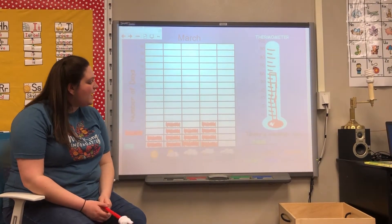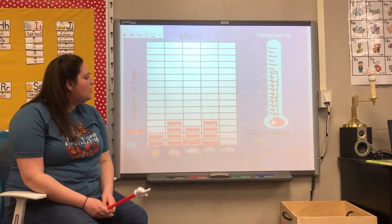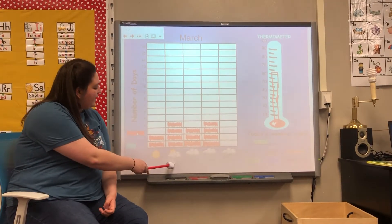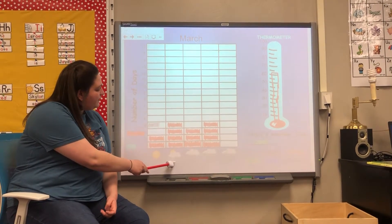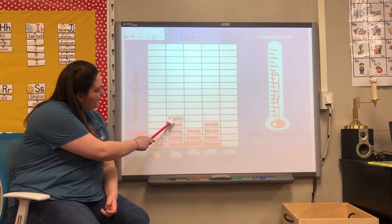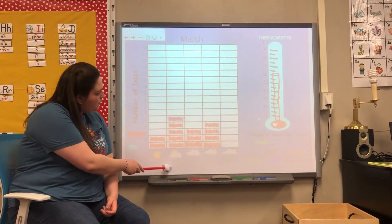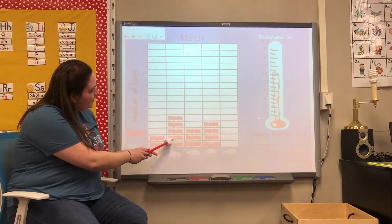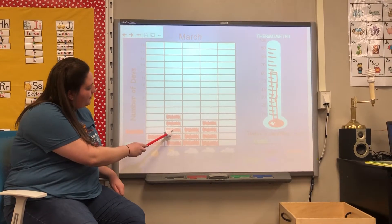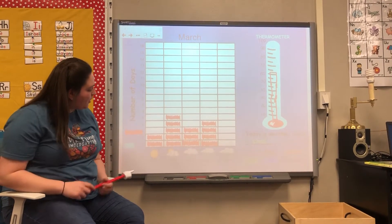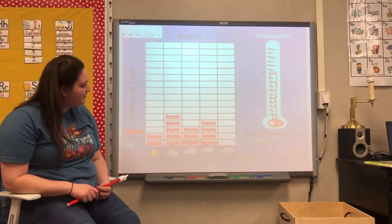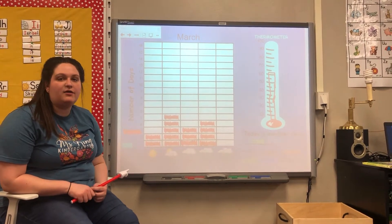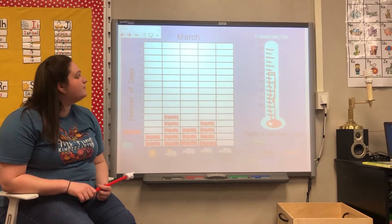Let's go ahead and check the weather. The weather where I am is partly cloudy, so I'm going to add another box where it says partly cloudy. Now I have one, two, three, four, five partly cloudy days. Pause the video now and color in what the weather is at your house.